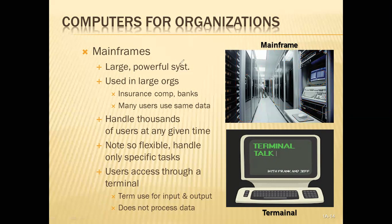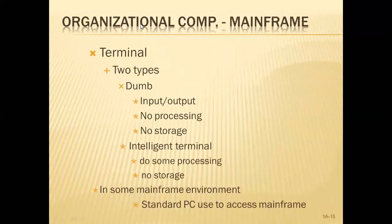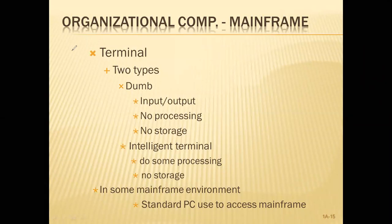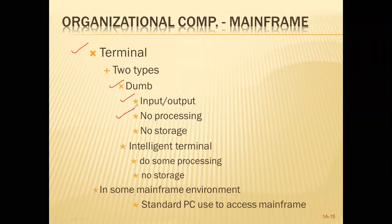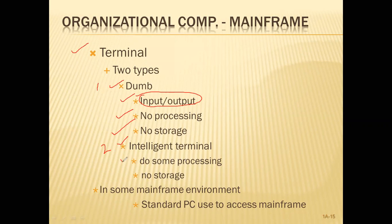The terminal cannot be used for storing or processing. Now, the terminal has two types. The first type is the Dumb Terminal. A dumb terminal is used only for input and output from the mainframe. There is no processing or storing in the dumb terminal — it is just for input and output. The second type is called the Intelligent Terminal. The intelligent terminal can do some processing — small processing.